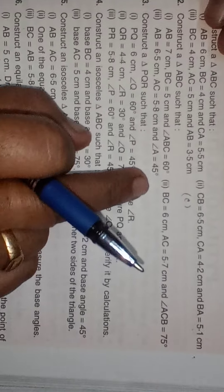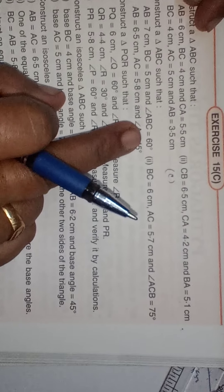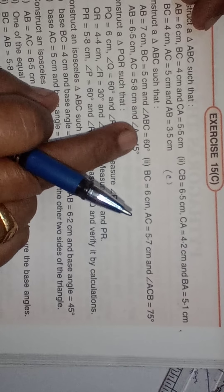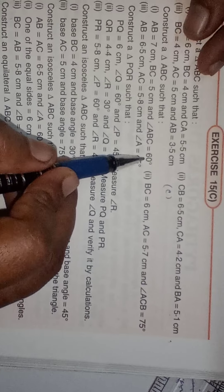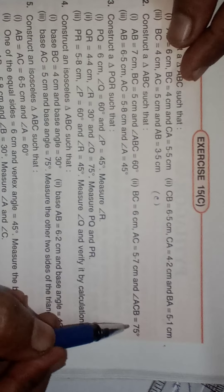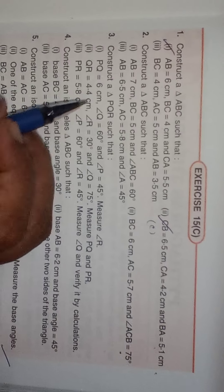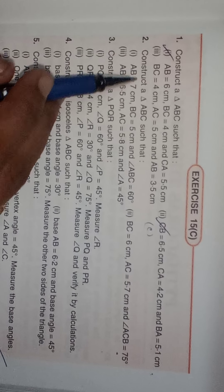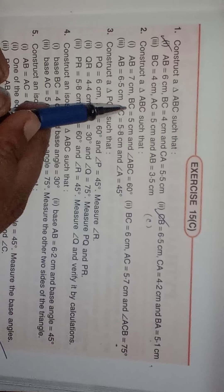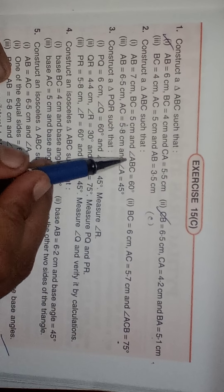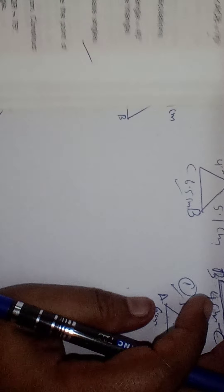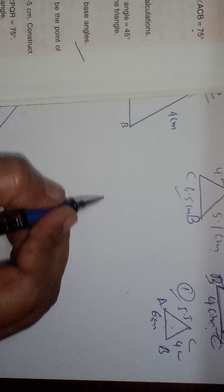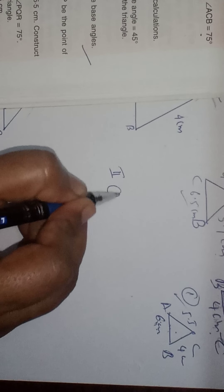For two sides and one angle, you can use a compass or protractor to construct the angle. For 60 degrees you can use the compass, but for 75 degrees you can use the protractor. Now moving to the second set of questions. Construct triangle ABC: AB equals 7 cm, BC equals 5 cm, and angle ABC equals 60 degrees. First draw the rough figure.